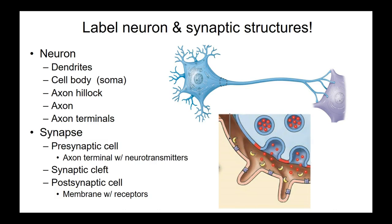The synaptic cleft is this space in here. Generally when we talk about a synapse, we're talking about what's happening to get information from the presynaptic cell to the postsynaptic cell, so it does include parts of both. If we're talking about just the space, we're talking about the synaptic cleft specifically.